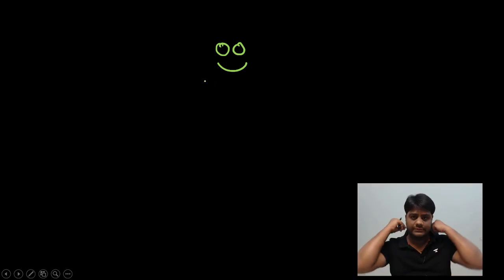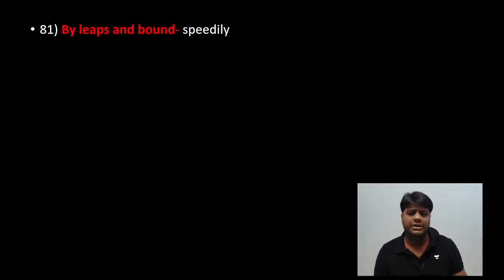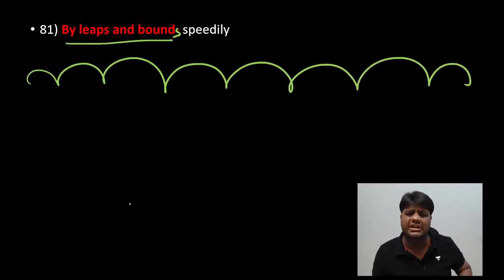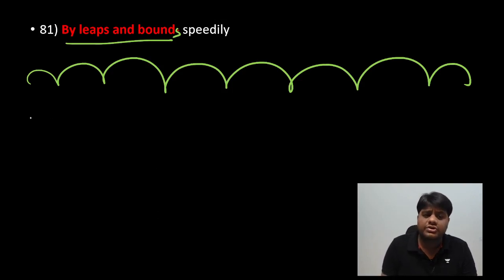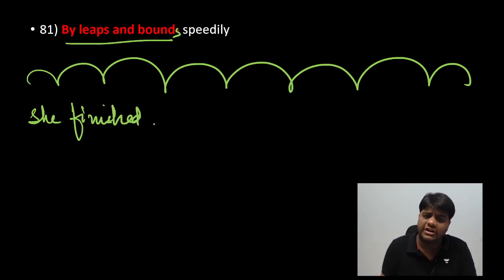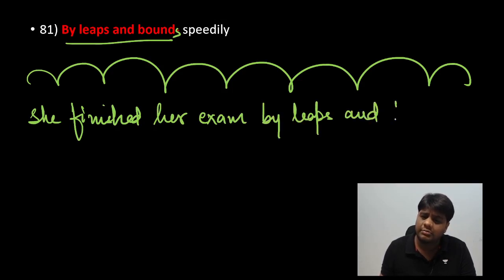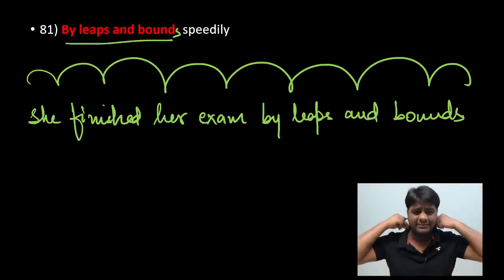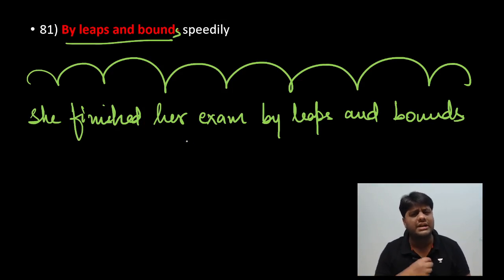Everyone attending the class — let us start. The first idiom today is 'by leaps and bounds.' It means rapidly or at a fast rate. For example, someone might be growing by leaps and bounds — they could be intelligent or not, but the progress is dramatic and fast.